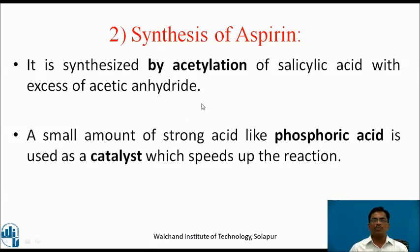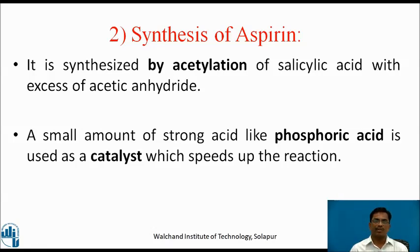The second drug we are going to learn about is aspirin — synthesis of aspirin. It is synthesized by acetylation of salicylic acid with excess of acetic anhydride. A small amount of strong acid like phosphoric acid is used as a catalyst which speeds up the reaction.